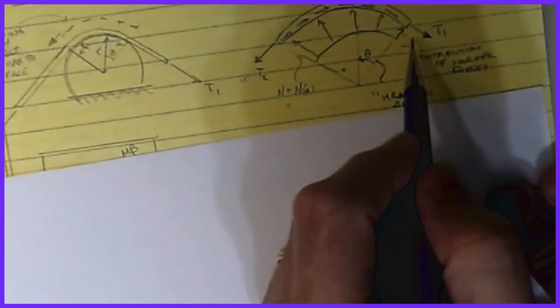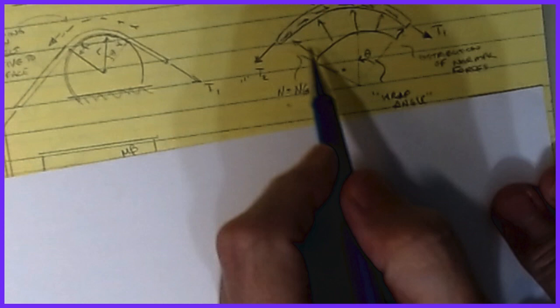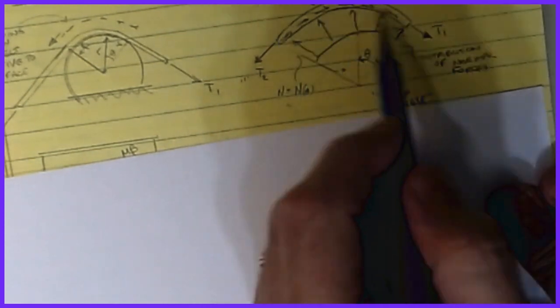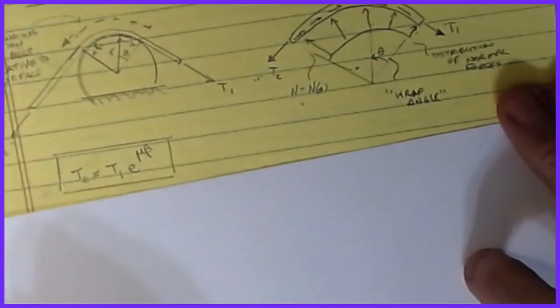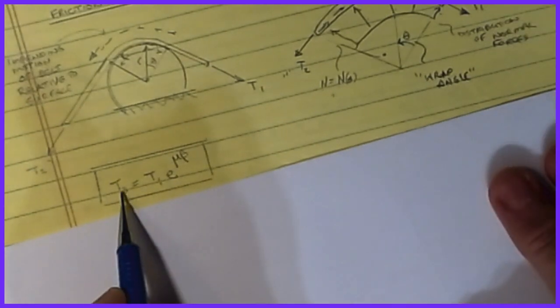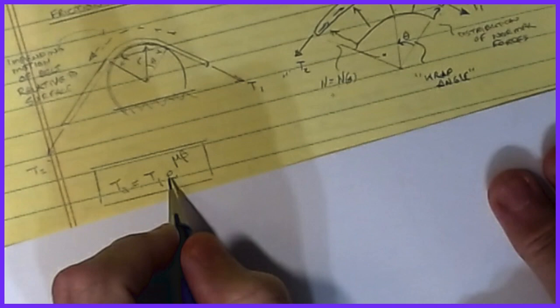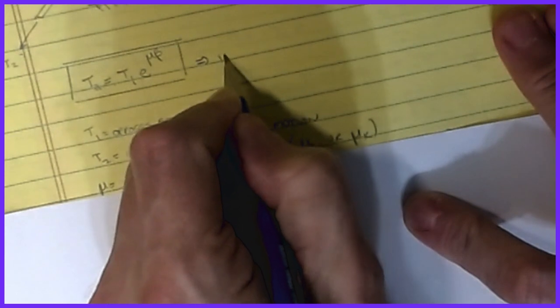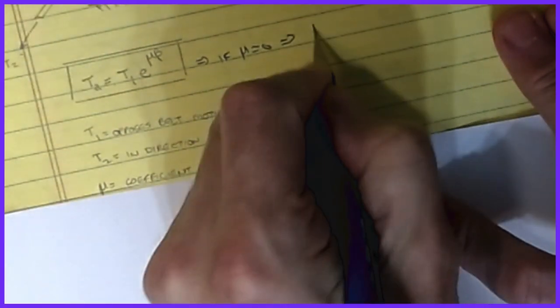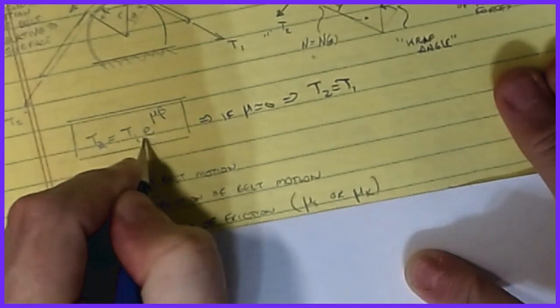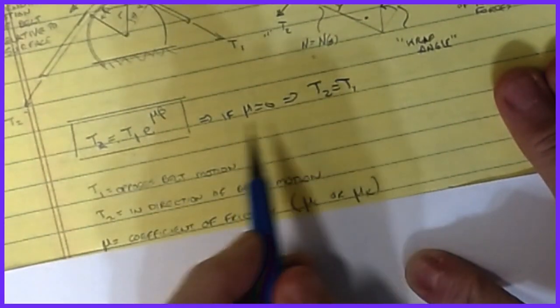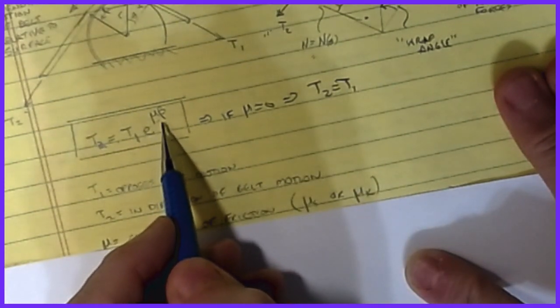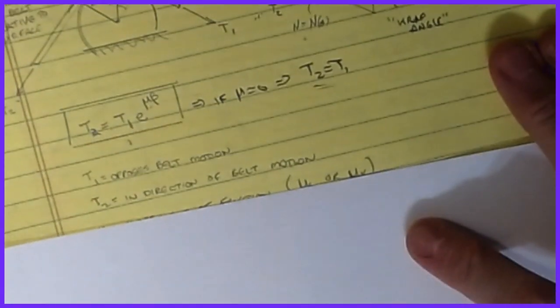Rather than solving for this complex distribution directly, we use a combined total value. The relationship is: T2 = T1 · e^(μ·β). For the frictionless case where μ = 0, this reduces to T2 = T1, exactly what we stated before. This equation works for all cases — friction and frictionless — and simply adds the friction coefficient and wrap angle to account for reality.